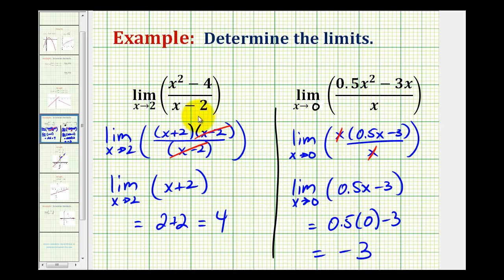So when we have a rational function that has removable discontinuity, we can often simplify it and then determine the limit by performing direct substitution.